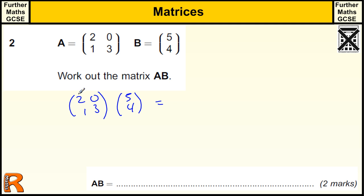we need to do 2 times the 5 plus 0 times the 4. So 2 times 5 plus 0 times 4. And we need to do 1 times the 5 plus 3 times the 4. So 1 times the 5 plus 3 times the 4.